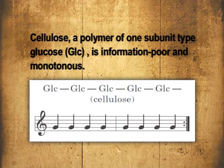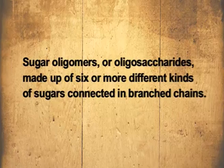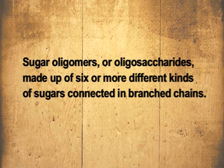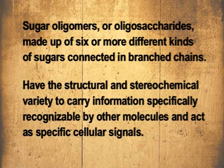Polysaccharides, in contrast, are usually composed of only one or maximum two different kinds of subunit. For example, cellulose is a polymer of glucose, so no structural or sequential variation is possible. Consequently, they cannot carry too much information - they can be considered informational poor. However, oligosaccharides, composed of different sugar molecules of six or more connected by branched chains, can show structural and stereochemical variation to carry information specifically recognizable by other molecules, and consequently they can act as specific cellular signals.